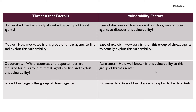If it's a large group like script kiddies, you're talking about a very large population; if you're talking about advanced persistent threats, that's a smaller population. Vulnerability factors include ease of discovery — can I find this using Shodan or automated tools? — ease of exploit, and awareness: is this a public exploit, a public CVE, or is it a zero-day? There's also intrusion detection: how easy is it for the organization to identify a vulnerability being exploited?